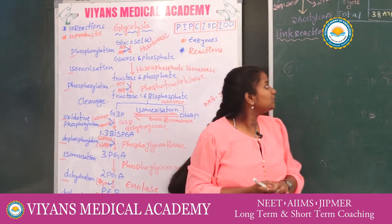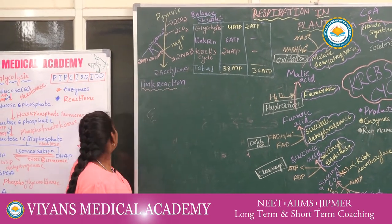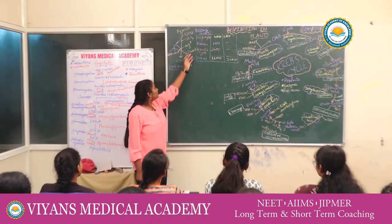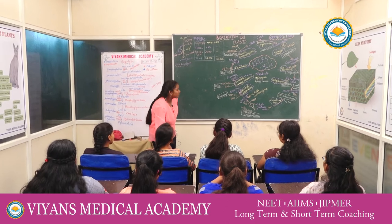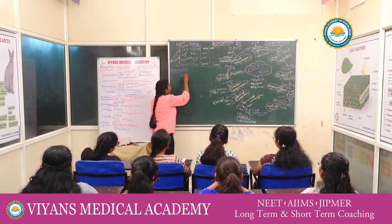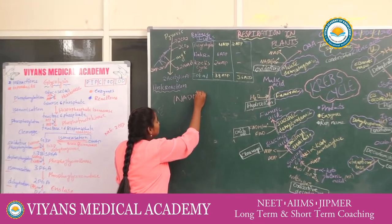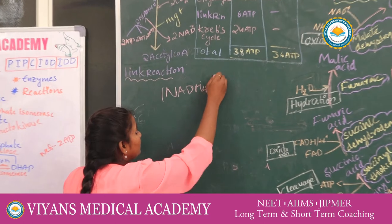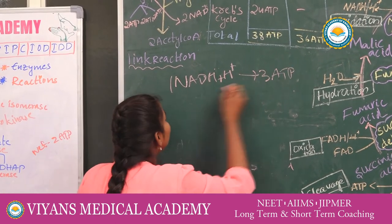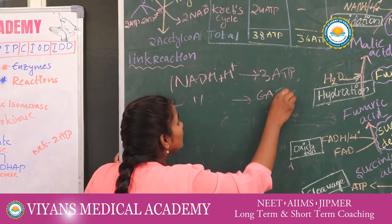Next is the link reaction — the bridge between glycolysis and the Krebs cycle. Two molecules of pyruvic acid from glycolysis are converted into acetyl co-enzyme A. Each NADH yields 3 ATP, and since there are 2 NADH produced, the link reaction yields 6 ATP total.